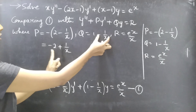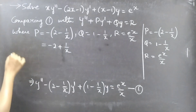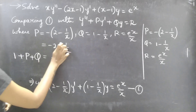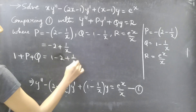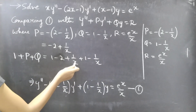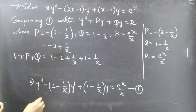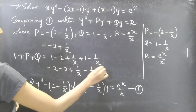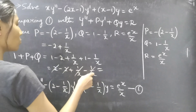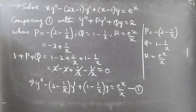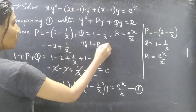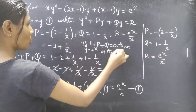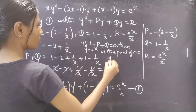Now we need to find a suitable part of the complementary function of equation 1. We notice P = −2 + 1/x and Q = 1 − 1/x. We can compute 1 + P + Q, which equals 1 + (−2 + 1/x) + (1 − 1/x). The 1/x terms cancel, and 1 − 2 + 1 = 0. So 1 + P + Q = 0.